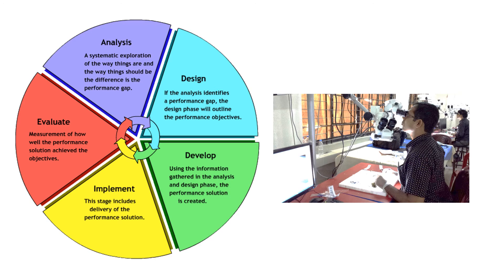When designing various instructional materials for an education program to resolve a performance gap, the ADDIE model — which stands for Analysis, Design, Development, Implementation, and Evaluation — is an excellent model to use. It consists of analyzing the needs, designing the educational program, developing the instructional material through various educational resources and skill acquisition programs, implementing it, and then evaluating its effectiveness in seeing whether the performance gap has been narrowed. This is an excellent model to be used for research in designing instructional material.